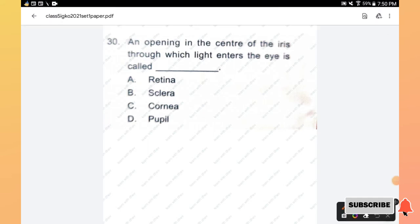Question number 30: An opening in the center of the iris through which light enters the eye is called: retina, sclera, cornea, pupil. The right answer is option D, pupil.